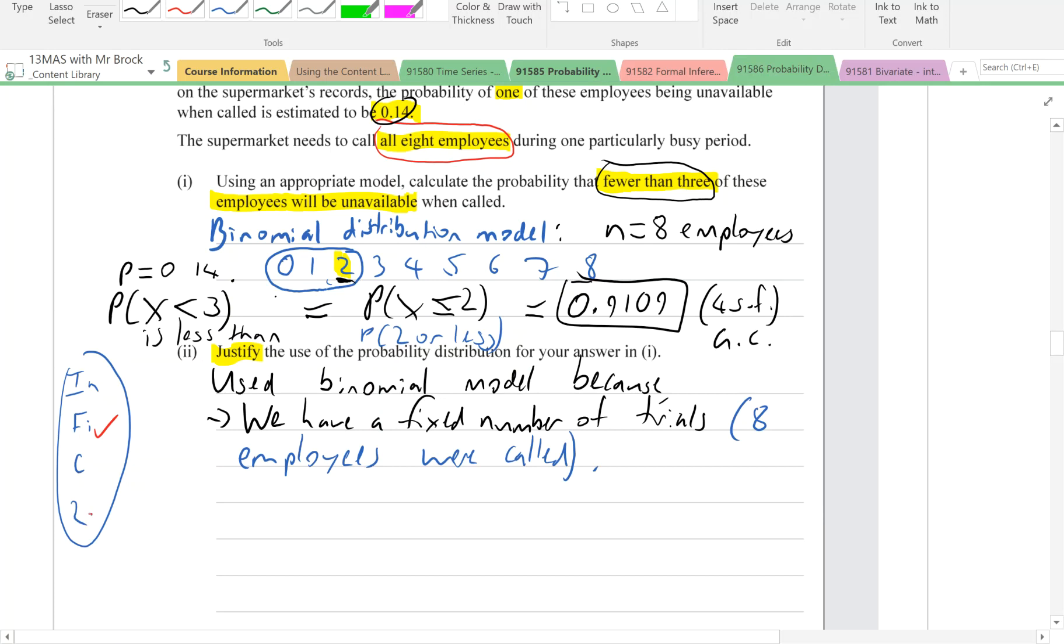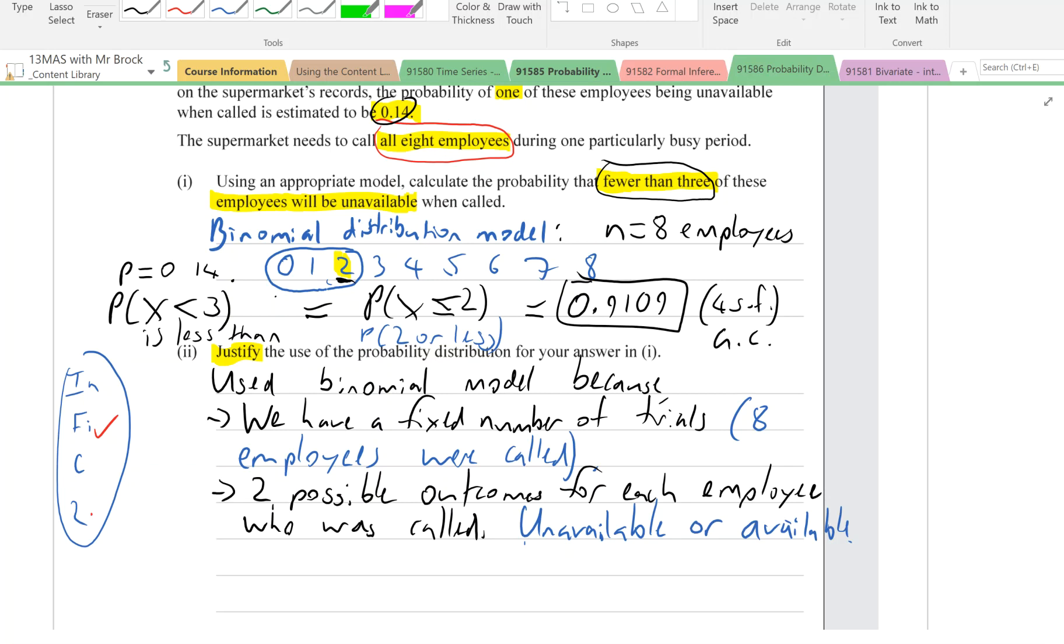Two possible outcomes for each trial. For each employee who was called. Getting that context in there. And the outcomes were unavailable or available.